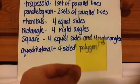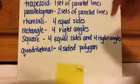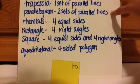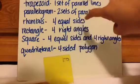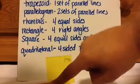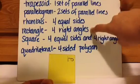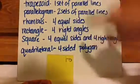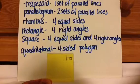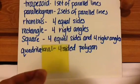Here's the next one. Parallel, parallel — so it's not a trapezoid; it's a parallelogram because I counted two sets. Four equal sides — so it's a rhombus. Four right angles — so it's a rectangle. And because it's a rhombus and a rectangle, it's safe to say that it's a square. And of course it's also a quadrilateral. So: parallelogram, rhombus, rectangle, square, and quadrilateral.